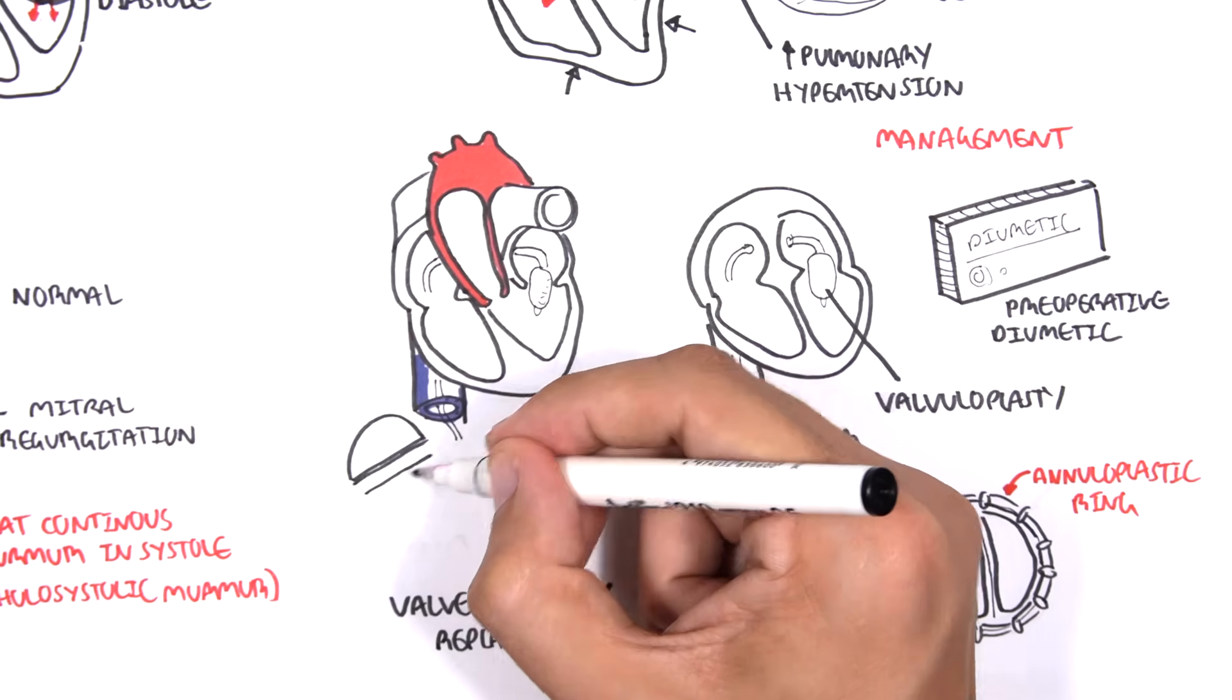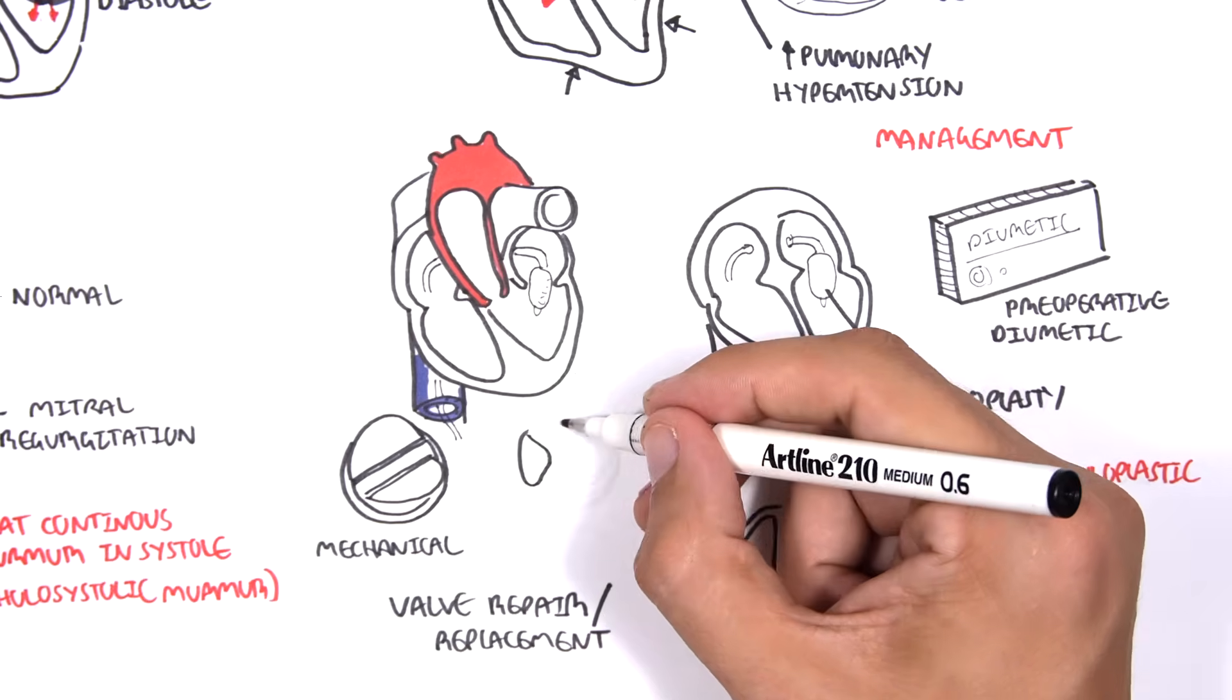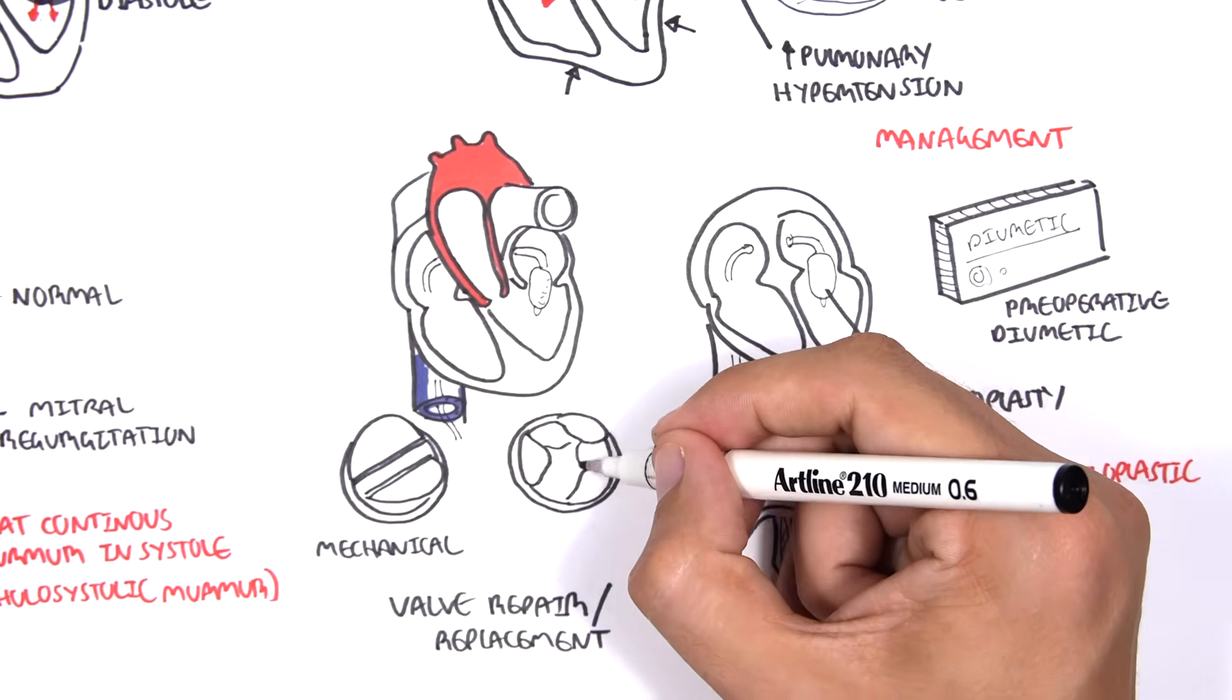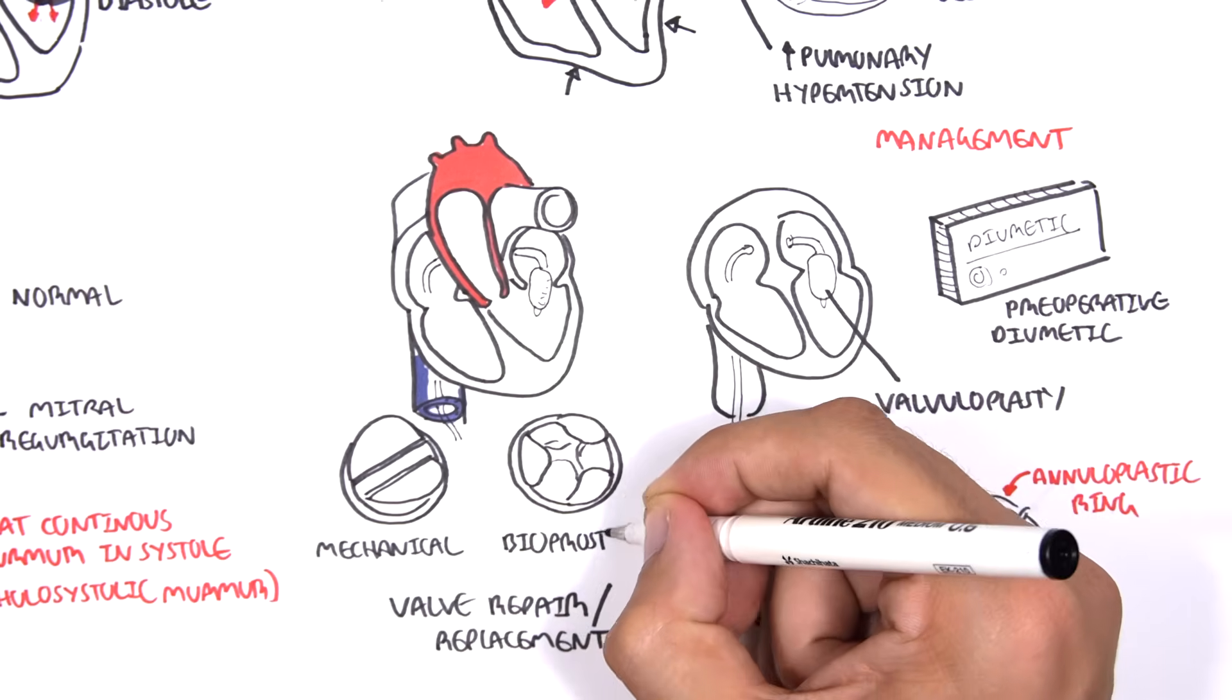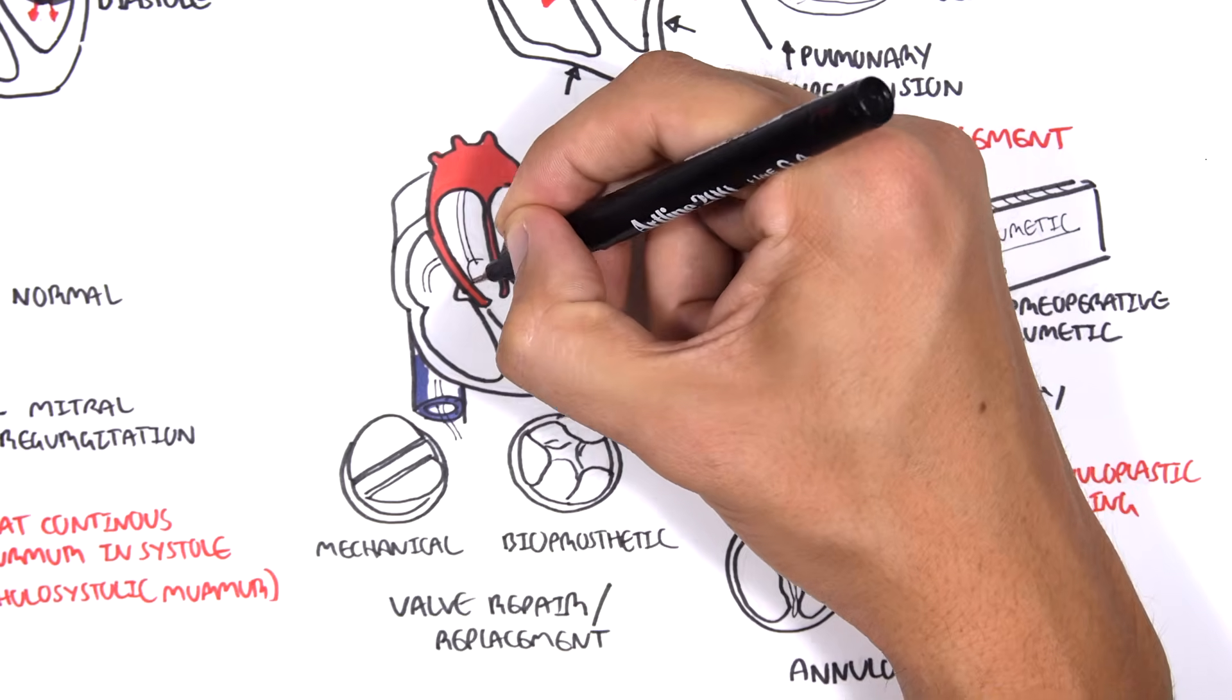Now back to the valve replacement and repair. The damaged mitral valve can be replaced with a mechanical or bioprosthetic valve. There are weaknesses and strengths between the two valves. Mechanical valves are often used for younger people because they last longer.